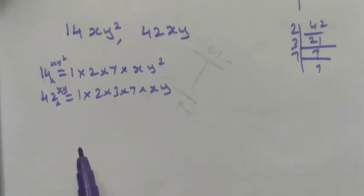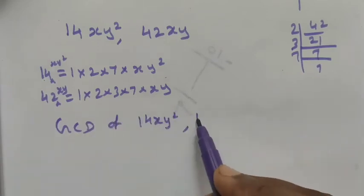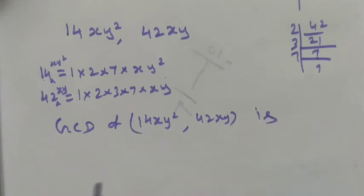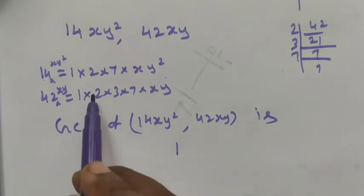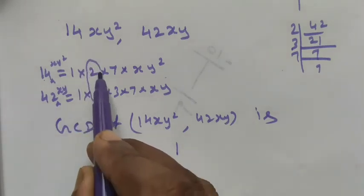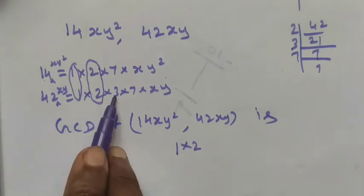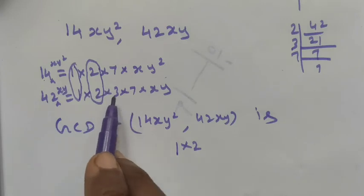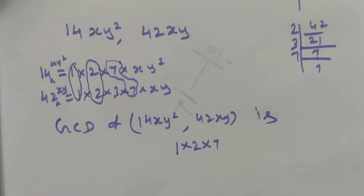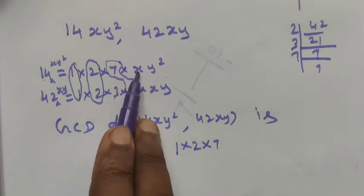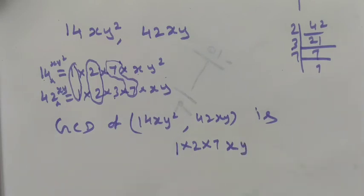The GCD of 14xy² and 42xy: 1 is common to both terms, and 2 is also common. 3 belongs only to 42, so it is not common. 7 is common to both terms. For the variables, x is common to both terms, so we take x. y is also common to both terms.